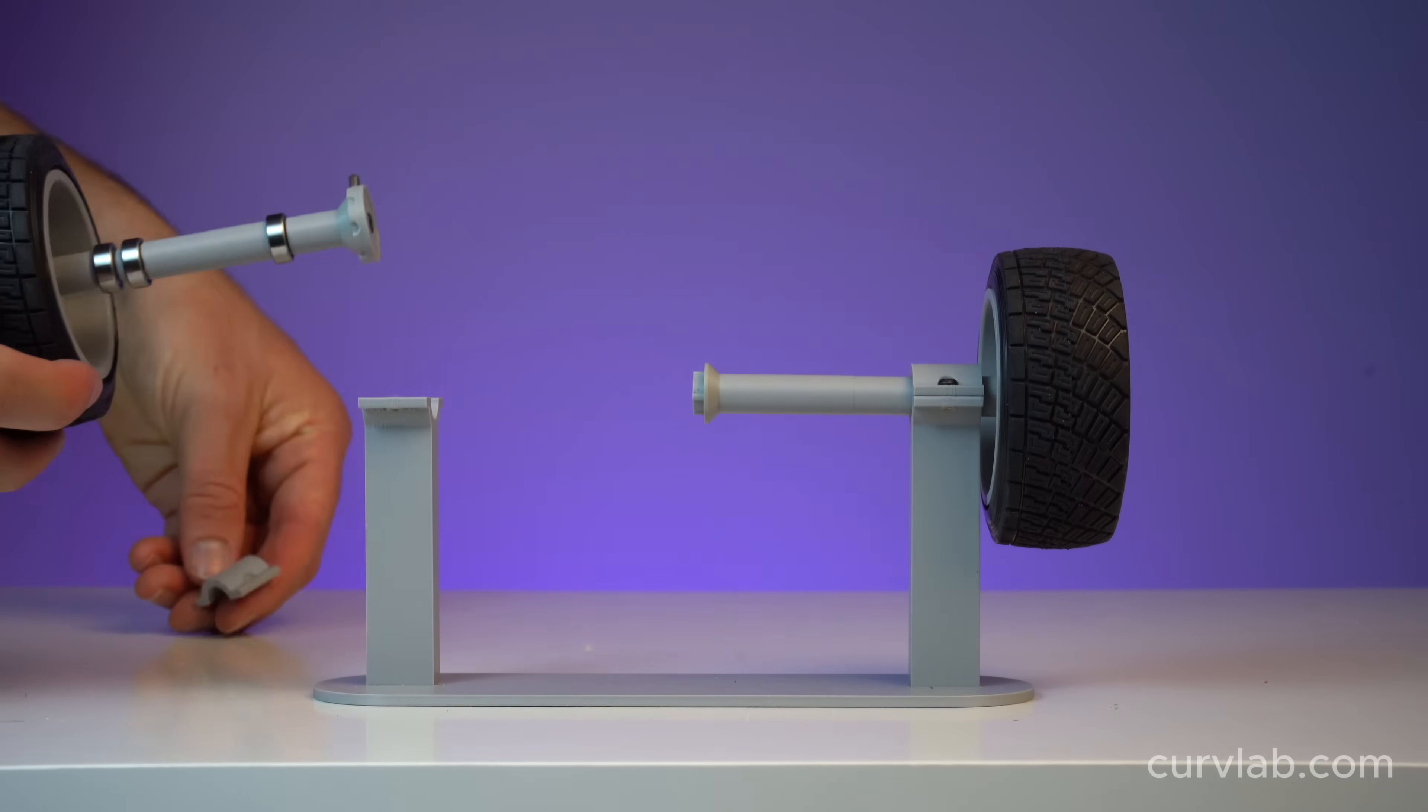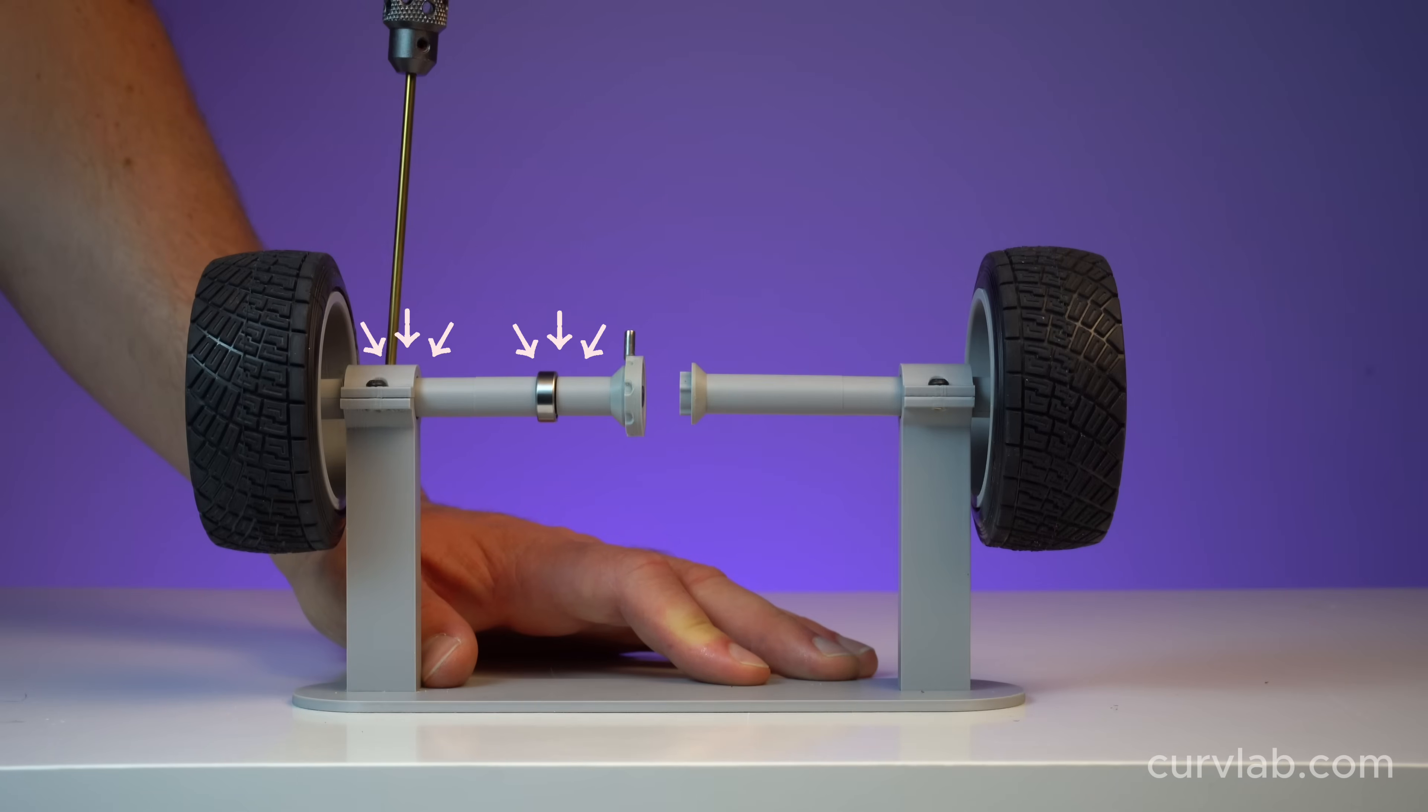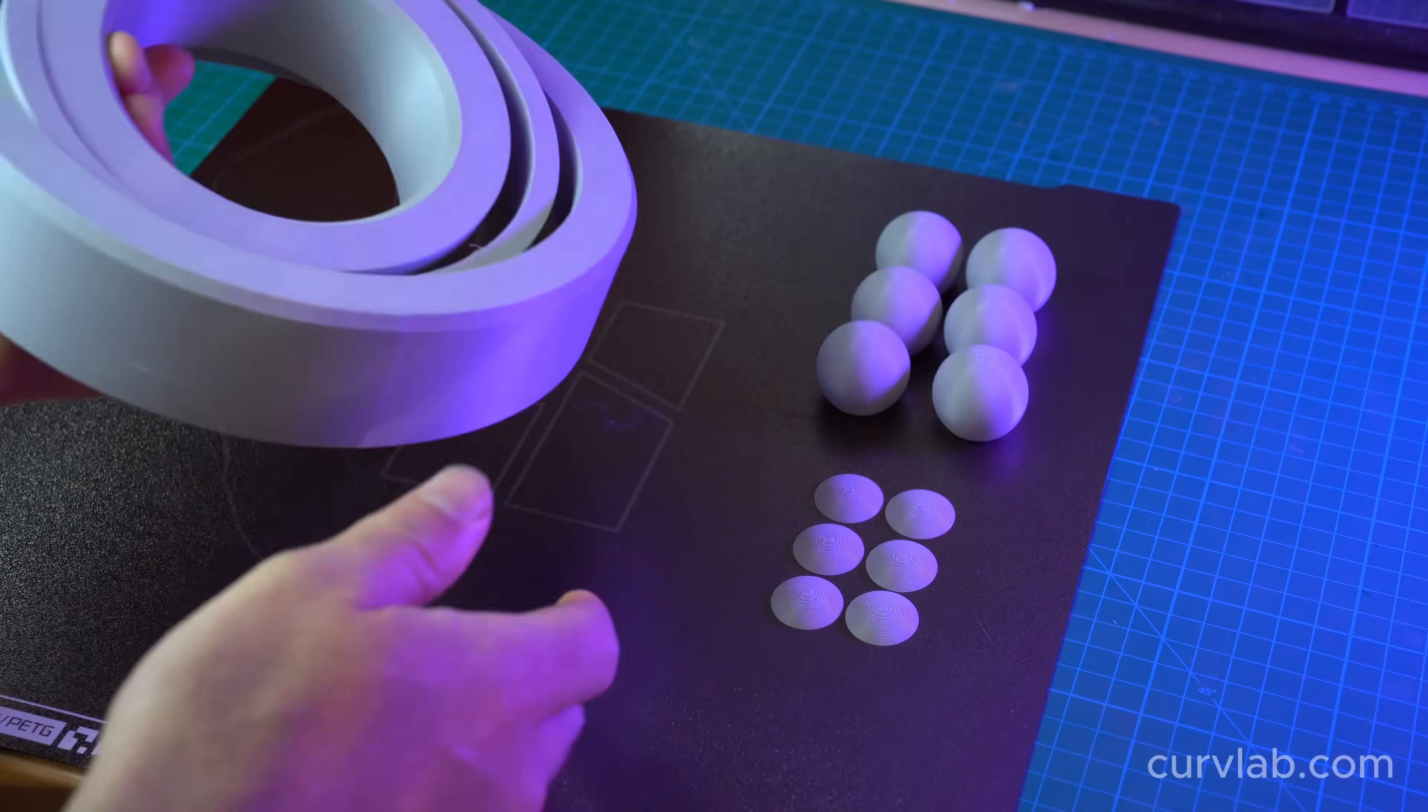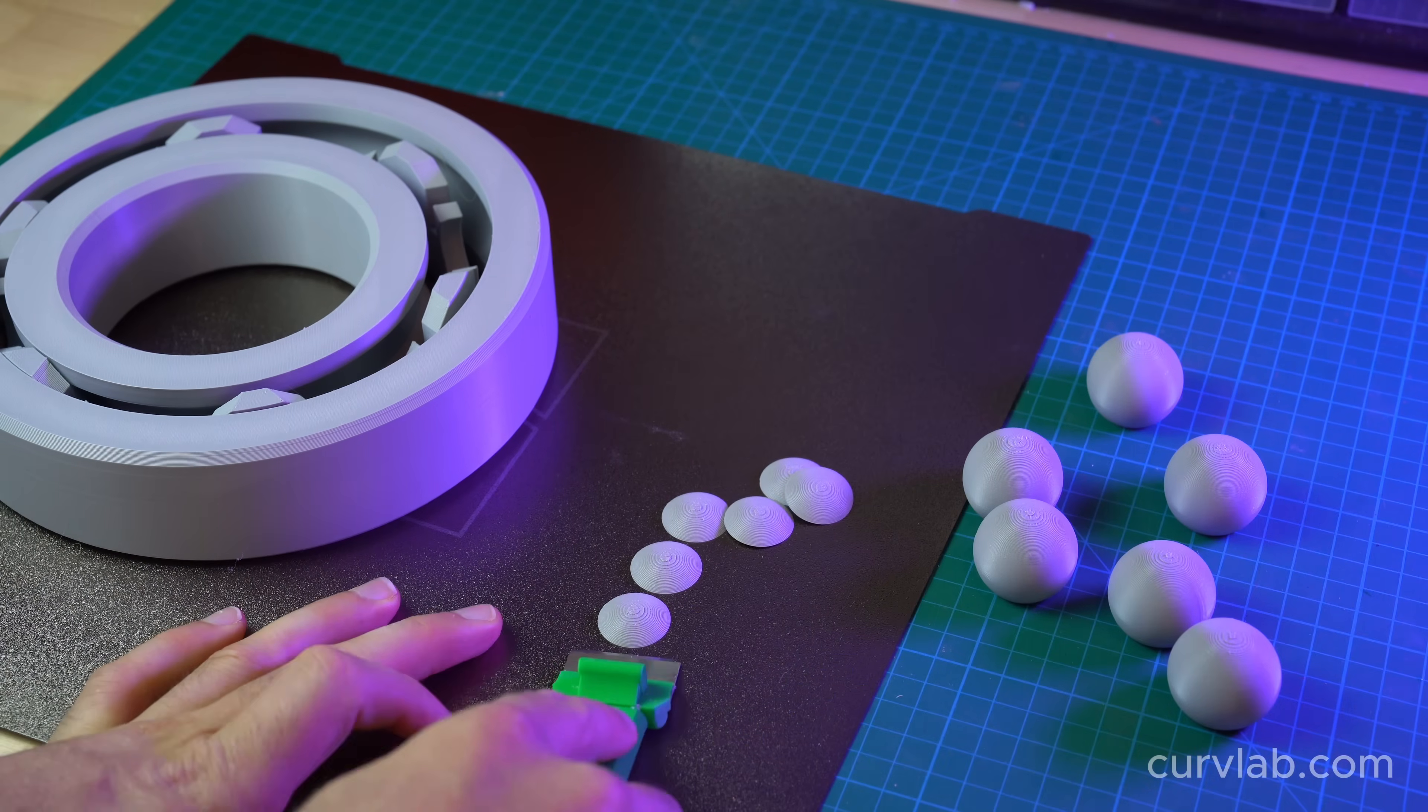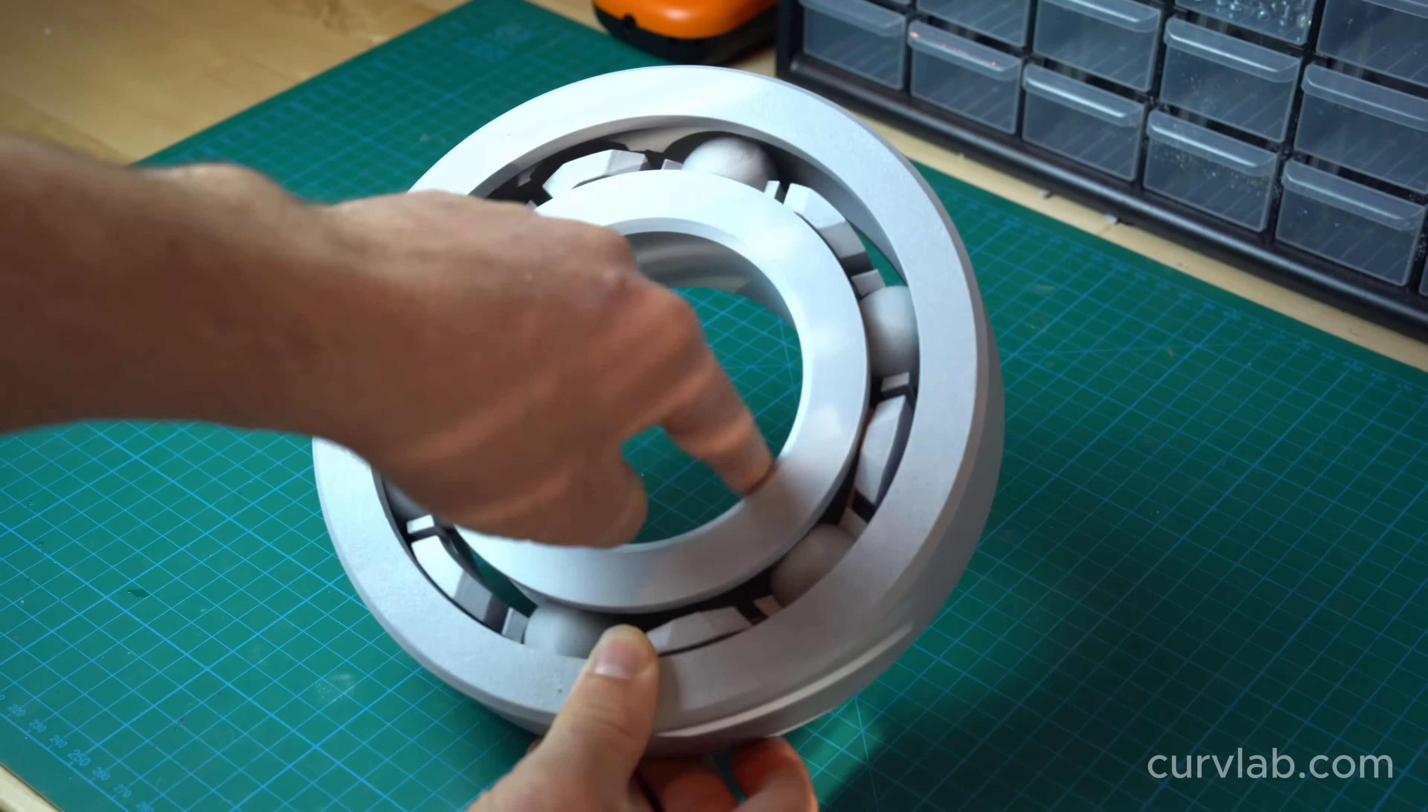The other components that we haven't considered yet are the bearings that allow everything to rotate with minimal friction. The bearings I'm using are really small and hard to see. So instead, to explain the design of these ball bearings a little bit more clearly, I'm going to use this comically large one that I printed on my new Bamboo Lab H2S.